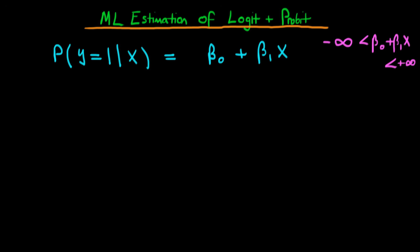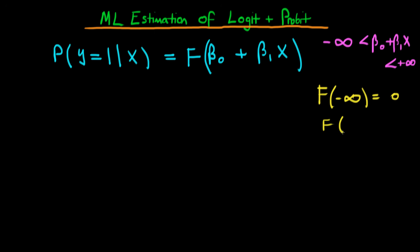One way we spoke about getting around this is using a non-linear function, which I'll write here as f of our linear combination of independent variables. The way f works is that f of minus infinity is defined to be equal to 0, whereas f of plus infinity is defined to be equal to 1.